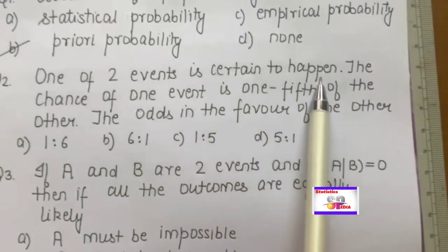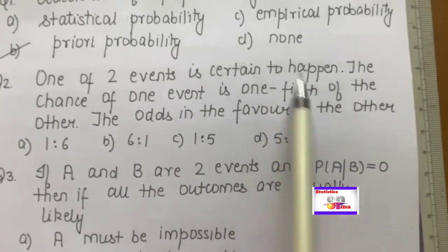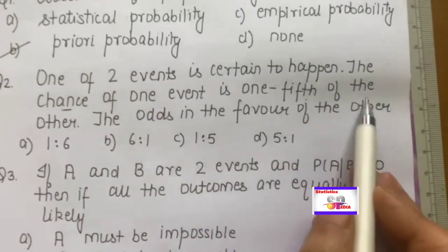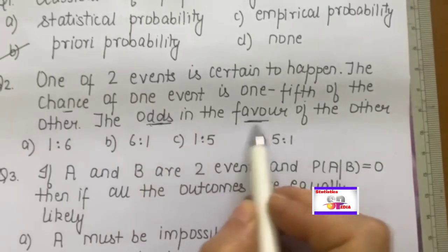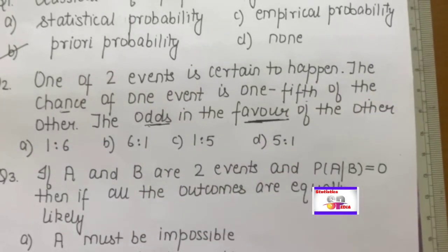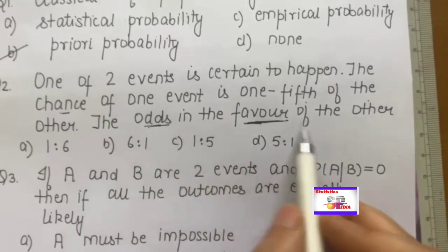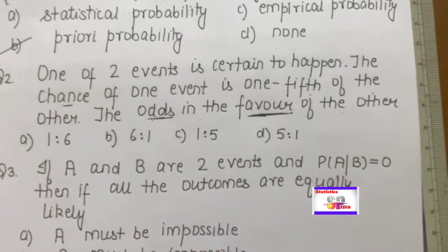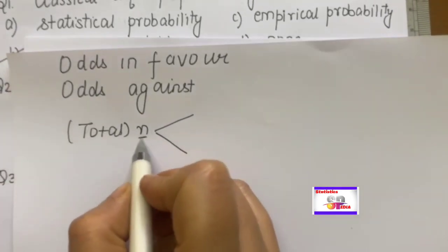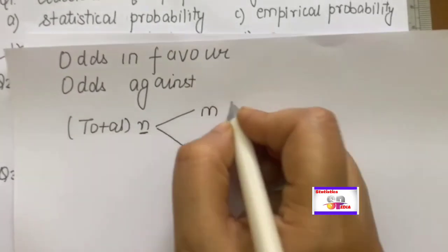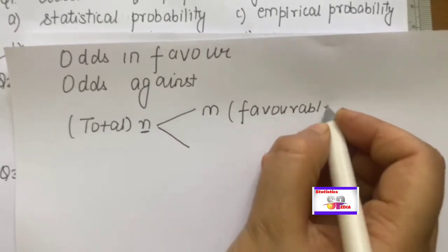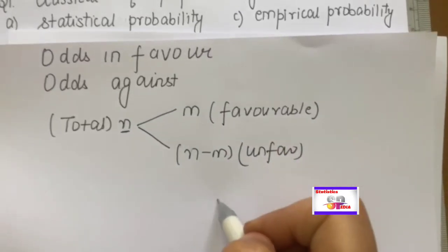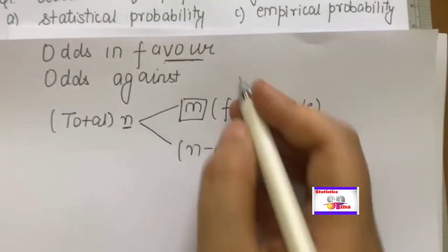Next question: one of two events is certain to happen, and the chance of one event is one-fifth of the other. We need to find the odds in favour. First, understand: total outcomes are broken into m (favorable) and n−m (unfavorable). Odds in favour means the ratio of favorable to unfavorable, that is m : (n−m). Odds against means the ratio (n−m) : m.